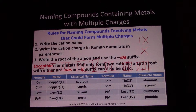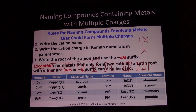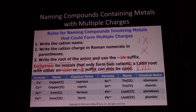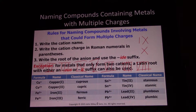The classical stems are: copper — cuprum, iron — ferrum, tin — stanum, lead — plumbum. The higher of the two charges becomes cupric, ferric, stannic, or plumbic. The lower of the two charges becomes cuprous, ferrous, stannous, or plumbous. Notice it doesn't matter what the charge number is — copper two is the higher of the two copper charges, whereas iron two is the lower of the two iron charges. The higher one gets the IC ending and the lower one gets the US ending.